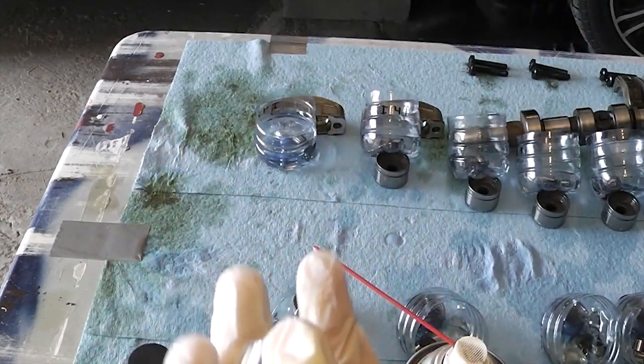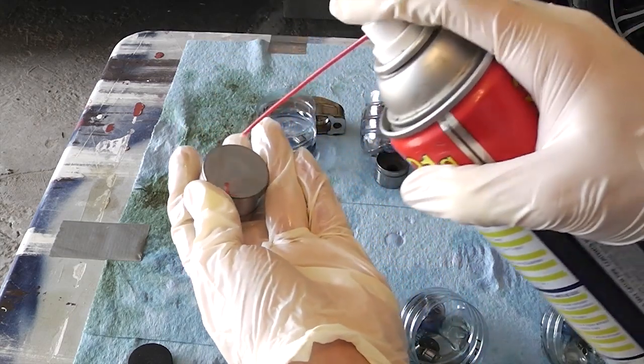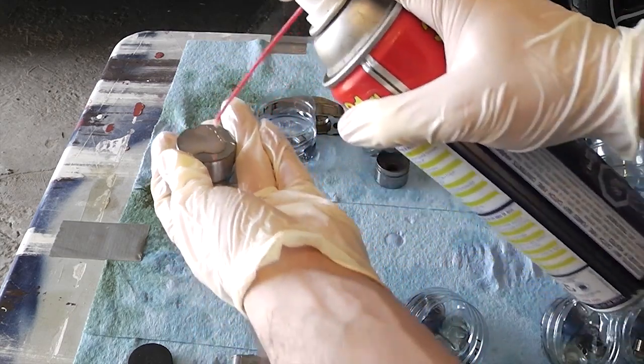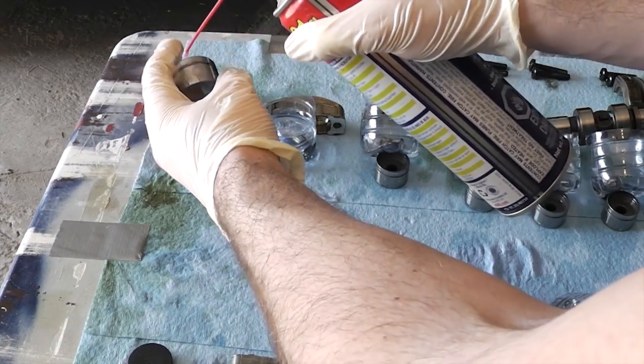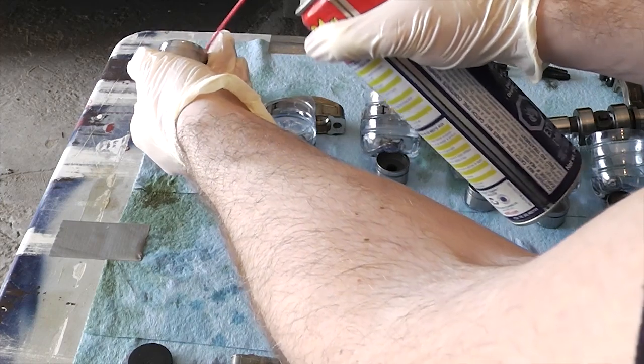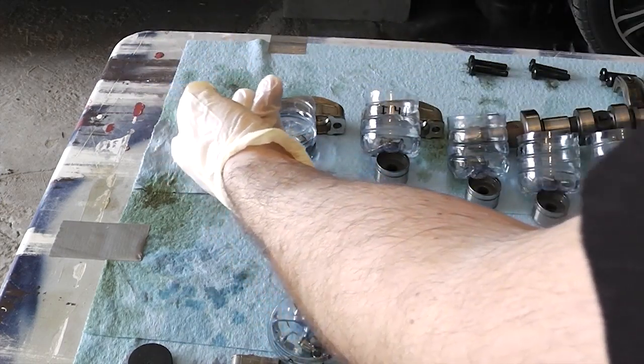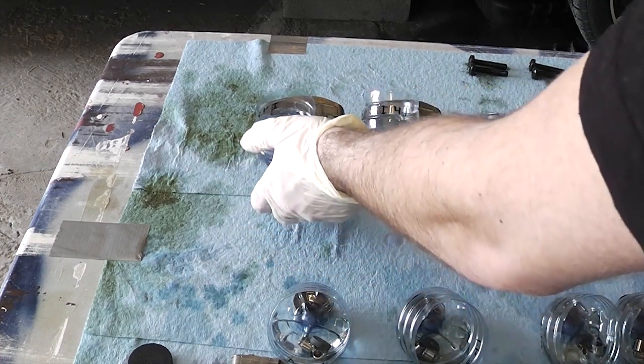And finally, while everything is soaking, I'm just going to take some WD-40 and just spray the outside. Just so it doesn't rust. I mean this is steel after all and it's exposed to air and it's just been washed with water, so just a quick little spray of WD-40. And now I'm going to leave it and wait for the rest to clean.